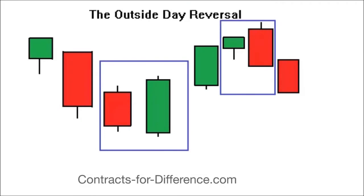The outside day reversal is one of our little gems of trading. If we see it, we trade it. There aren't many patterns you can say that for — a lot of patterns have many factors to consider before making a decision. But with this pattern, instead of looking for justification why we should trade it, we look for reasons why we shouldn't, because it's pretty much: if we see it, we're going to trade it.